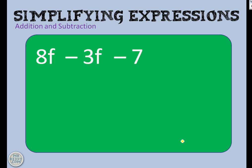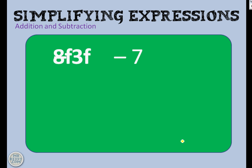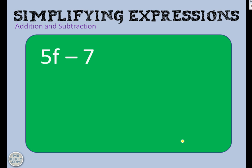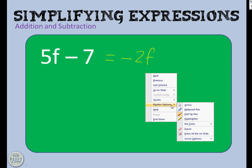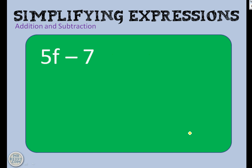8f take away 3f take away 7. What can you do? Well, you can do the bits that have the f's first: 8f take away 3f gives you 5f. Then 5f take away 7. Those people who love to simplify everything as far as they possibly can will go too far and say it's negative 2f — nope, it isn't. That is as far as you can go: 5f take away 7.